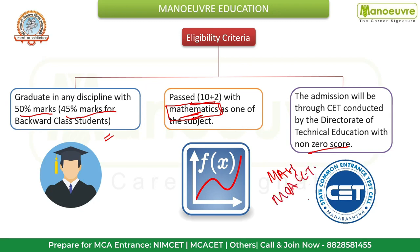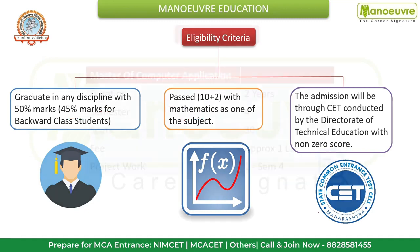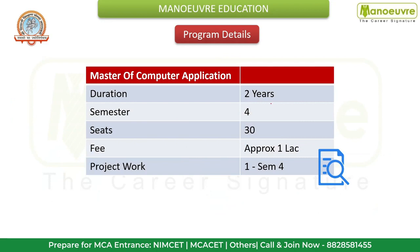Regarding program details: MCA is a two-year program divided into four semesters. Total seat intake is 30. The fee structure is approximately one lakh rupees — this may vary, so check the official website for proper updates. Every student is required to carry out full-time project work in Semester 4.